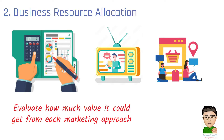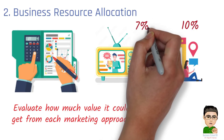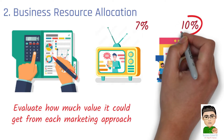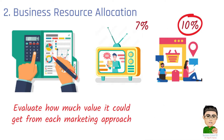Let's say online marketing could give a 10% return and TV ads give a 7% return. Then, by choosing TV ads, the company is giving up a 10% potential growth from online marketing.